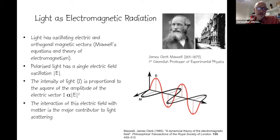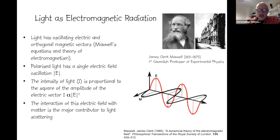Light scattering has a very good connection with Cambridge and the LMB. The LMB originated at the Cavendish labs in the centre of Cambridge. The first Cavendish professor of experimental physics was James Clerk Maxwell, who developed equations describing electromagnetic radiation. In Maxwell's description, if you consider plane polarized light, you have an electric field oscillation and a perpendicular magnetic field oscillation.